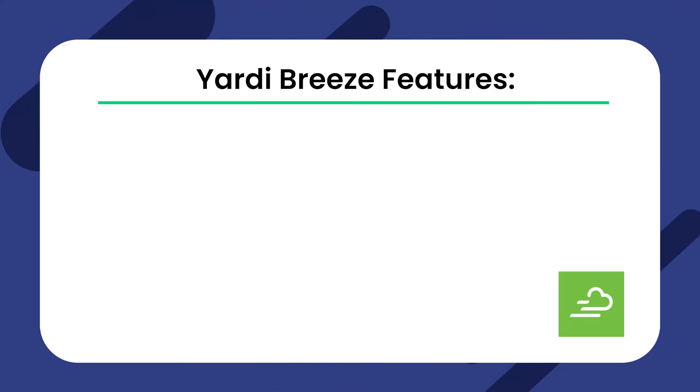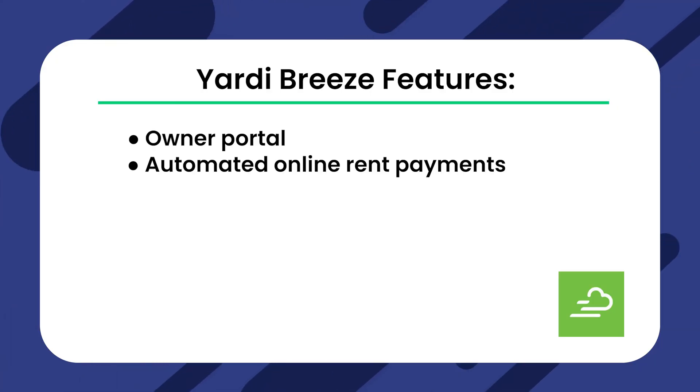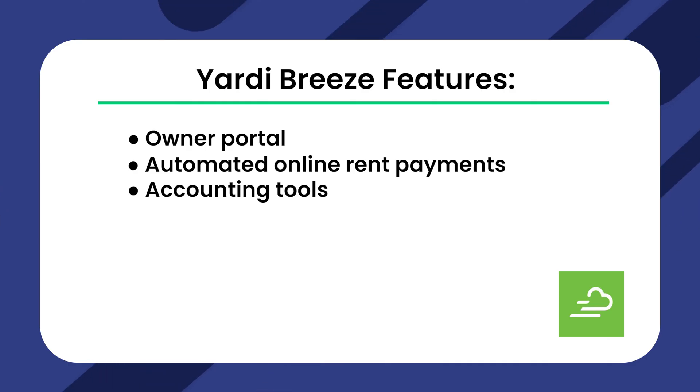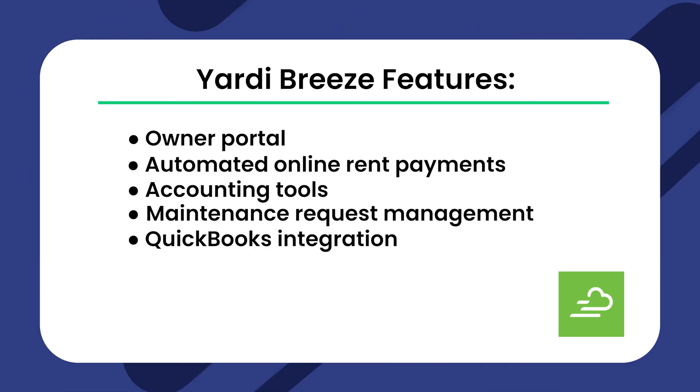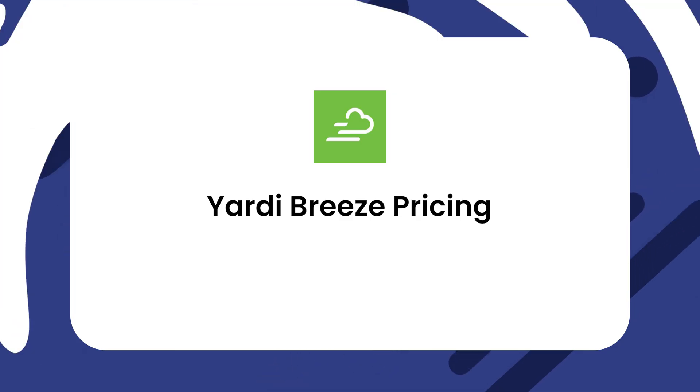Yardi Breeze is targeted towards users with a small portfolio consisting of mostly residential properties. Its users have also praised its intuitive, easy-to-use interface. Yardi Breeze features include an owner portal, automated online rent payments, accounting tools, maintenance request management, and QuickBooks integration. Yardi Breeze's pricing differs depending on the type of properties you're managing. For residential properties, it starts at $1 per unit per month for the basic plan and $2 per unit per month for the upgraded plan. However, the plans have a minimum monthly fee of $100 and $400 per month respectively.